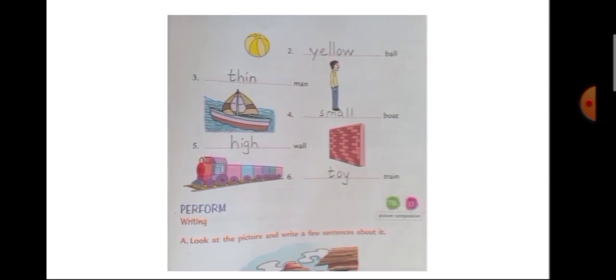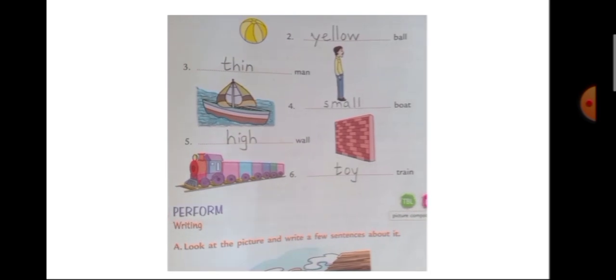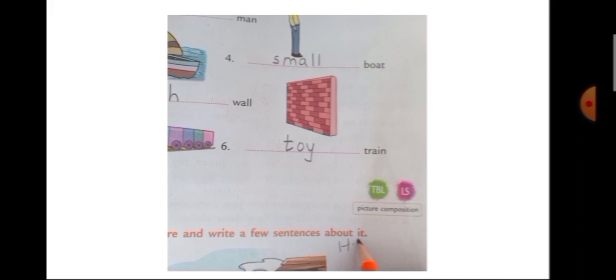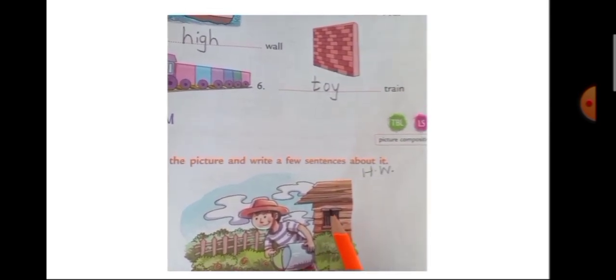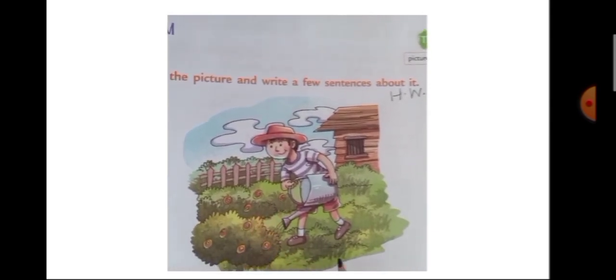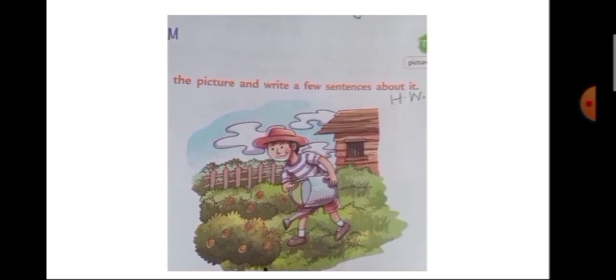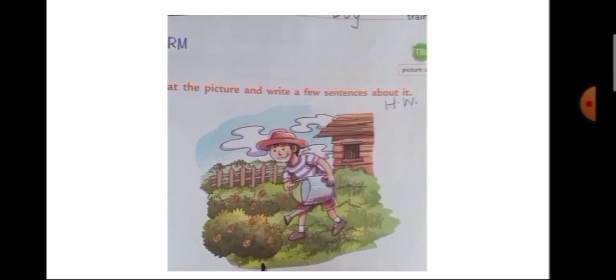So like this you have to fill in the describing words. Now let's read the next question: Look at the picture and write a few sentences about it. Children, look at this picture and frame a few sentences and write them in your rough book — number 9. So this is a homework. Write here H.W. You can write: There is a house. There is a big garden in front of the house. The boy is watering plants. Like this you can frame sentences and write.